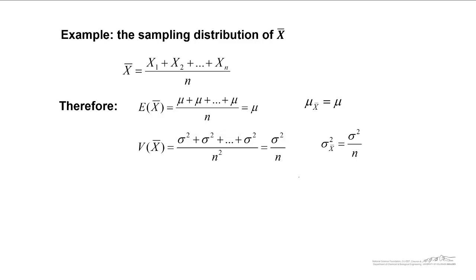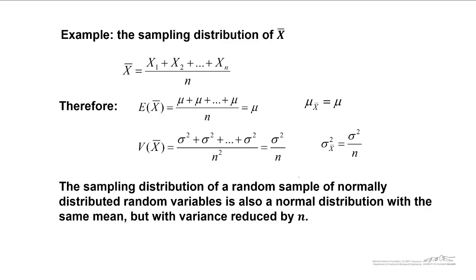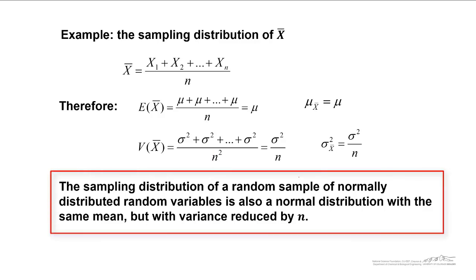So the n does not cancel out because of this n squared that we have in the denominator. So importantly, the sampling distribution of a random sample of normally distributed random variables is also a normal distribution with the same mean, but the variance has been reduced by a factor of n. And that's really important for sampling distributions.